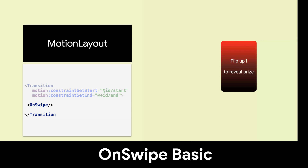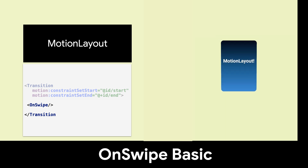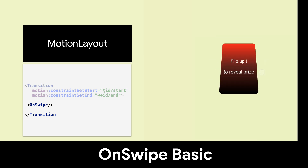In this example, the widget is Motion Layout. The OnSwipe has no attributes and detects the swipe up to rotate the two views.